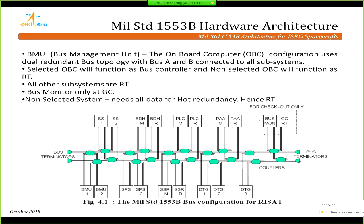This is a typical bus configuration. We have both main and redundant buses — Bus A and Bus B — connected to all subsystems: payload controllers, data handling systems, phased array antenna interfaces, gyros, solid state recorders, and GPS receivers. The bus management unit, or onboard computer, acts as bus controller; all others are remote terminals.